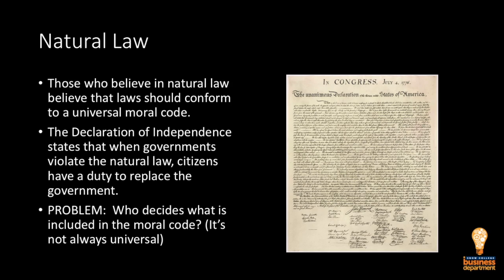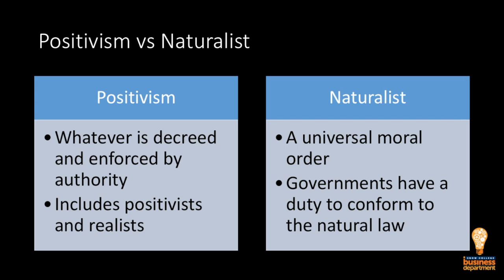The problem with the natural law school of thought is who decides what is included in the moral code — it's not always universal. To sum things up, there are a lot of different schools of legal thought, but the two major ones are positivism and the naturalists.